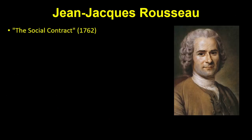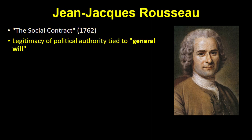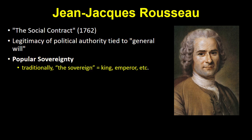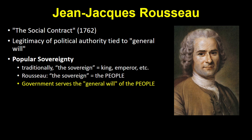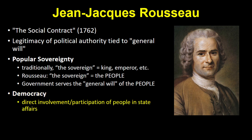The concept of the social contract was developed further by Jean-Jacques Rousseau. In his work The Social Contract, he emphasized that political authority is only legitimate if it serves the general will. Rousseau is also associated with popular sovereignty — sovereignty being about who rules the country, where power originates. Before 1750, sovereign usually referred to the king or emperor, but in Rousseau's ideal world, the sovereign is the people. He advocated for a government in which the people were directly involved in how the state functioned.